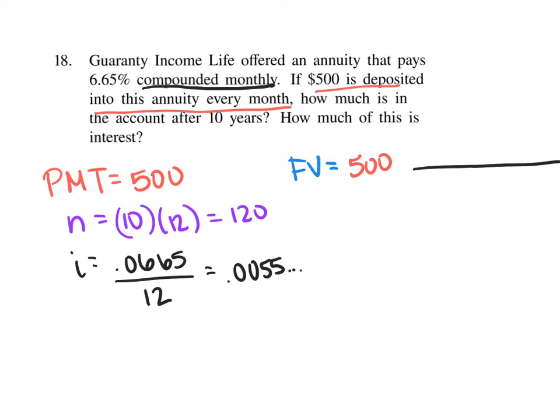times 1 plus your i. In this case, we're going to rewrite it like this to make sure we keep it exact. Raised to the n, which in this case is 120 payments, minus 1, all of that divided by i again.